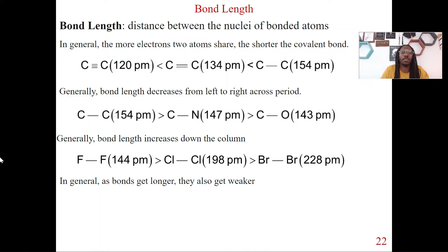All right, so the first trend we're going to talk about is bond length and essentially bond length is just a distance between the two nuclei of bonded atoms. So in this case, we're just literally looking at the length of the bond. So here's the first trend: more electrons two atoms share, the shorter the covalent bond.